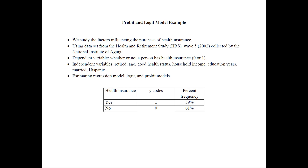The independent variables that we will use would be whether or not the person is retired, their age, whether or not they have good health status, household income, education years, whether or not the person is married, and whether or not a person is Hispanic.